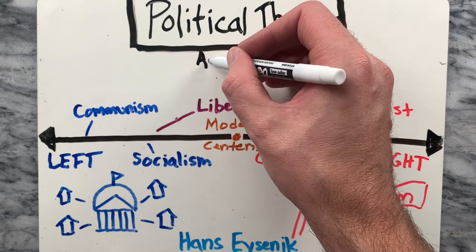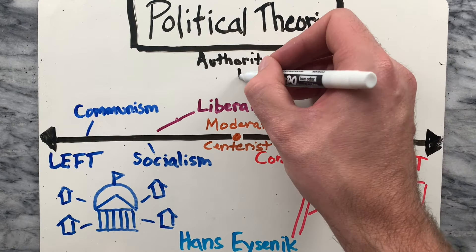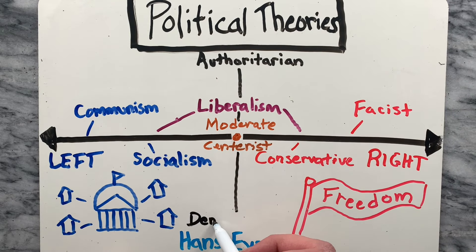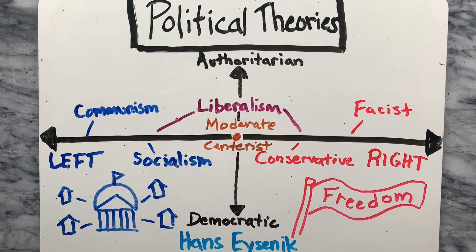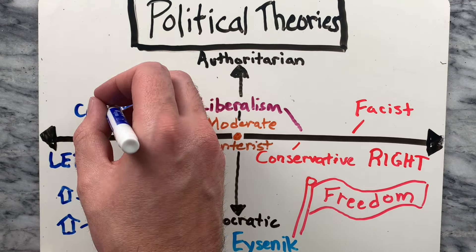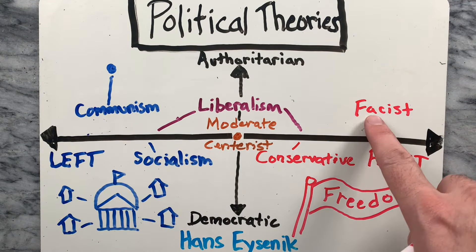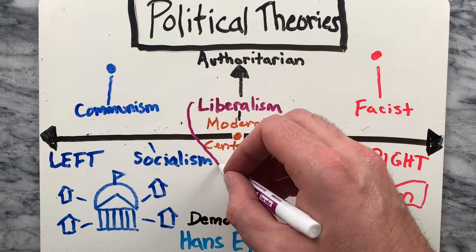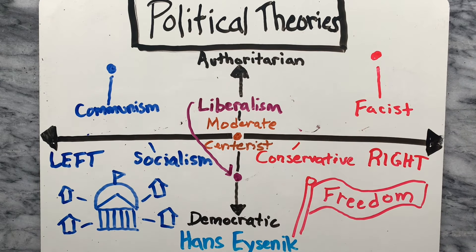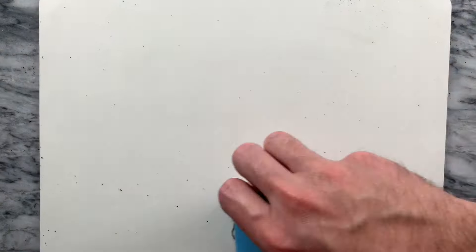Many argue that a one-dimensional spectrum is too simplistic. Hans Eysenck, a German-born British psychiatrist, made a model that added a second axis to the political spectrum with authoritarian and democratic dimensions to better place political theories.